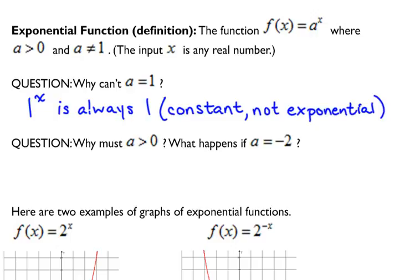So we've got 1, negative 2, 4. What if we plug in 3? Negative 2 cubed, that's negative 8. So we're bouncing back and forth between negative and positive values.